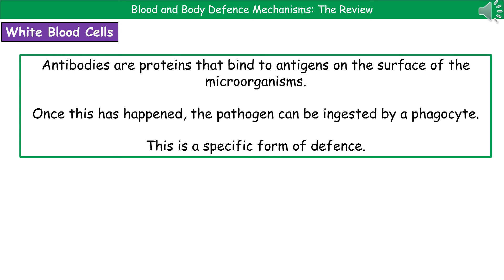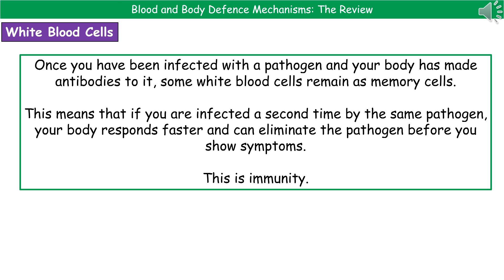After you've been infected with a pathogen and your body has made antibodies to it, the body retains some white blood cells as memory cells. This means that if that same pathogen infects you a second time, your body is able to respond faster, eliminating the pathogen before you show symptoms, because some of those white blood cells that can make that specific antibody remain in circulation in your blood. This is immunity — when we refer to being immune to something, it means you've got memory cells that can make antibodies to a particular pathogen much quicker, so you eliminate it before showing any symptoms.